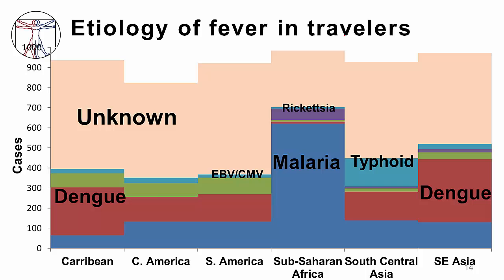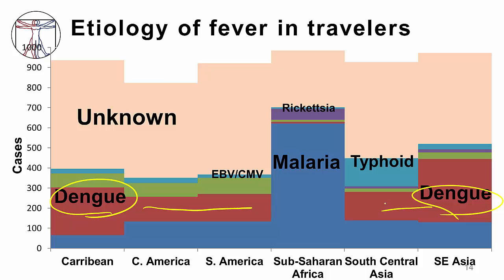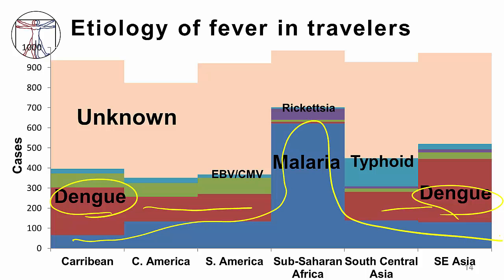Here is some data on the etiology of fevers in travelers. The two most common identifiable causes of fever are dengue fever — most common in the Caribbean, Central and South America, Southeast Asia, and South Central Asia — and malaria, which although common in many places, is really most common in Sub-Saharan Africa. Other common causes of fever in returning travelers include typhoid or Salmonella infection, certain types of rickettsial infections, and Epstein-Barr virus and cytomegalovirus infection.